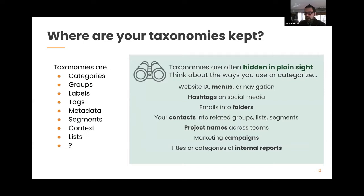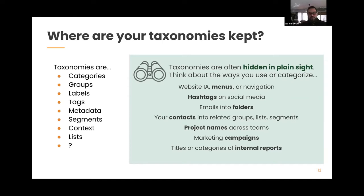Where are your taxonomies kept? Other terms for taxonomies include categories, groups, labels, tags, metadata, segments, contexts, and lists — all classifications that let you gather similar things together. Lists and segments are a way of organizing your information, and those lists will tell you what your taxonomies are or could be. For example, if you have an email list from a particular program on a topic, that topic is one of your taxonomies. If you're lucky, you have documentation in your organization — like a website information architecture document listing topics and how to use them — and that's a great place to start.